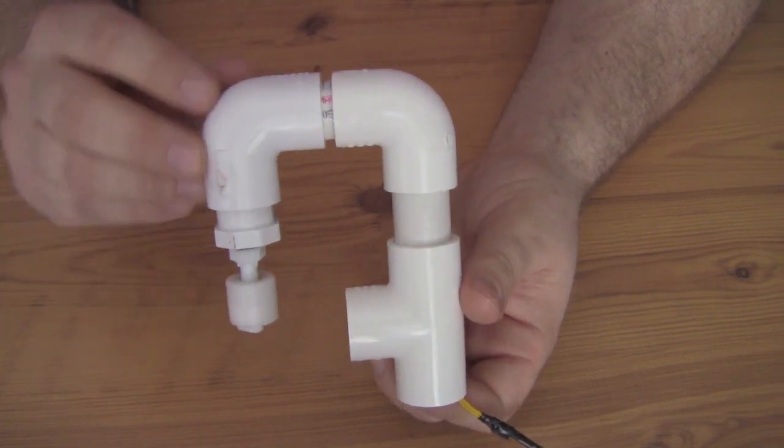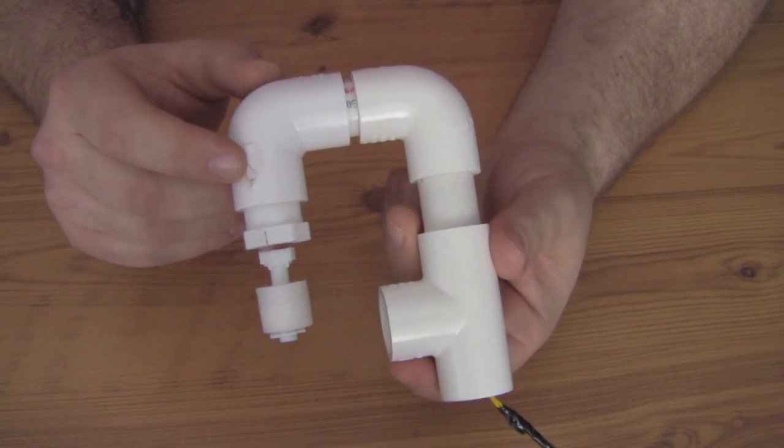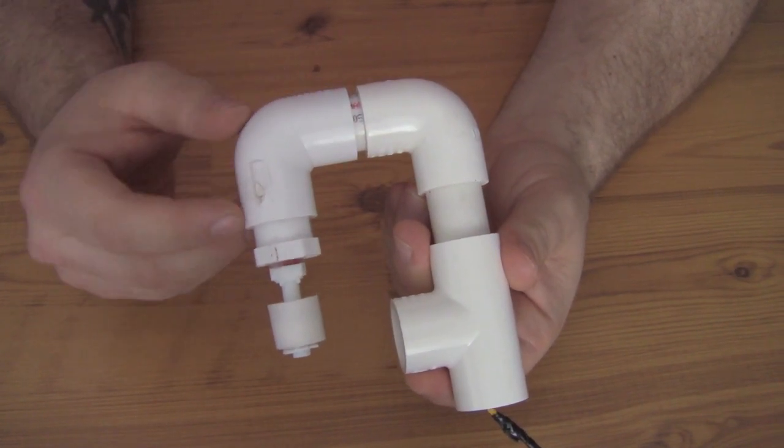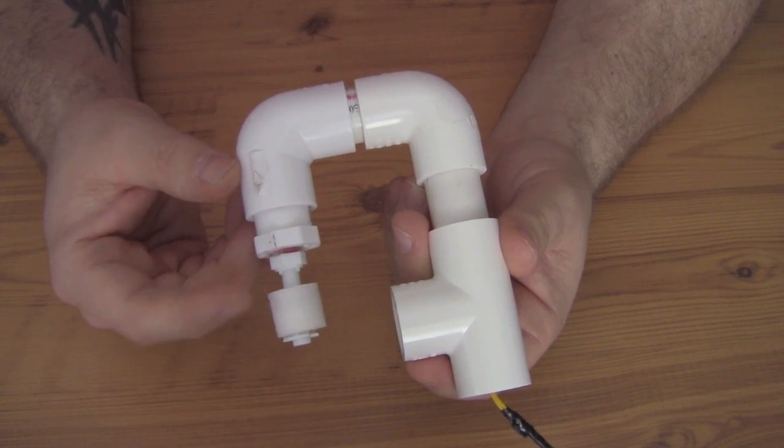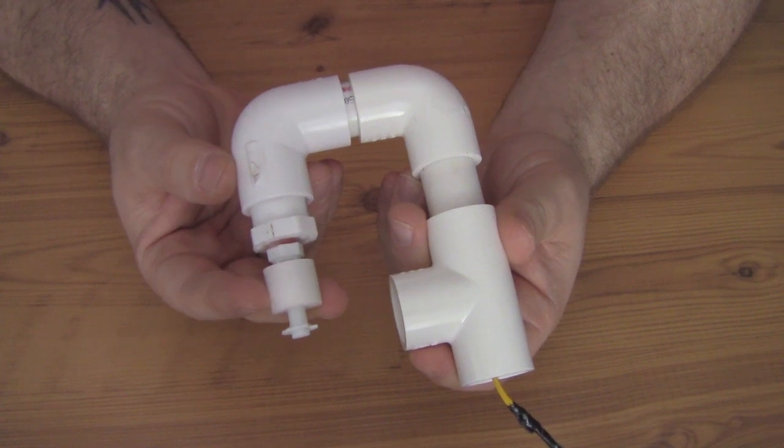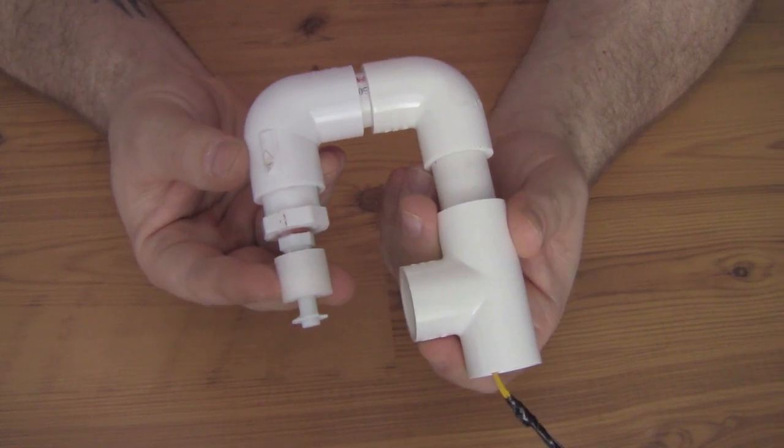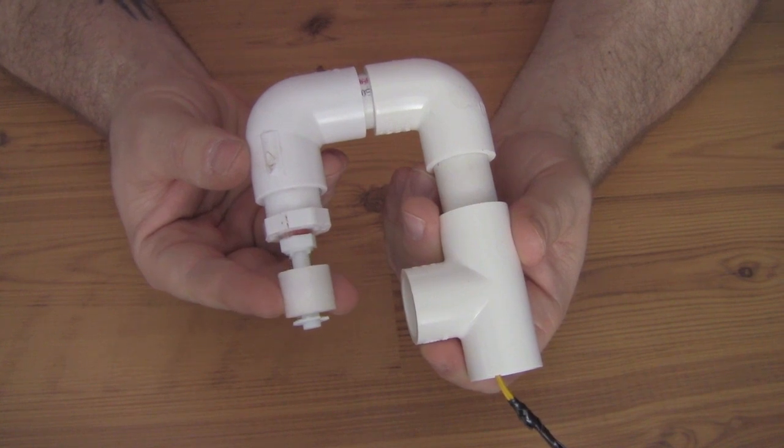They're pretty simple, simplistic devices. The main aspect of an Auto Top Off system is the float switch. This is the float switch right here. And when an aquarium is full, this little float will be at the top. And as water evaporates, it will slowly drop down.